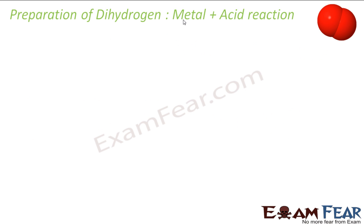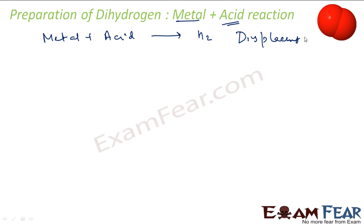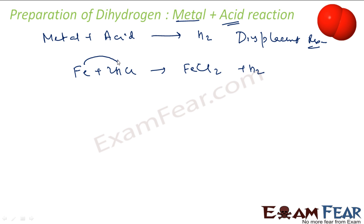The next method is metal plus acid. Some metals don't react much with water, so you need acid to generate hydrogen gas. You add a metal to acid — sometimes heat is needed — and you get hydrogen via a displacement reaction. For example, iron plus dilute hydrochloric acid gives FeCl₂ and hydrogen gas. Similarly, zinc plus dilute sulfuric acid — the method used in the lab — gives zinc sulfate plus hydrogen gas.